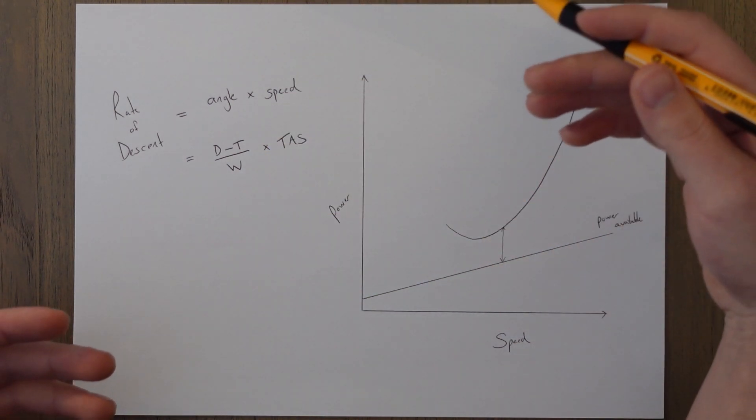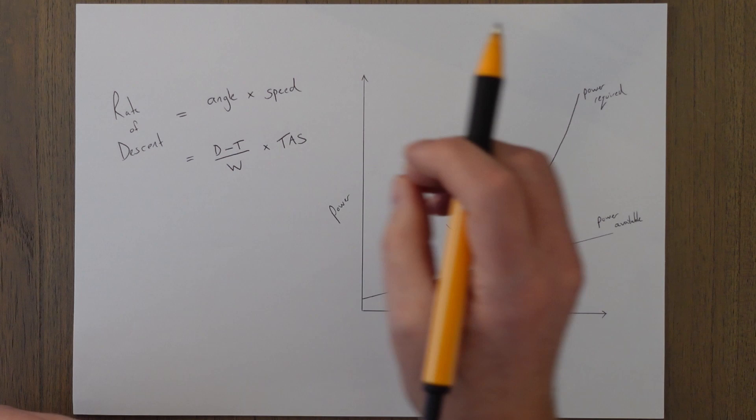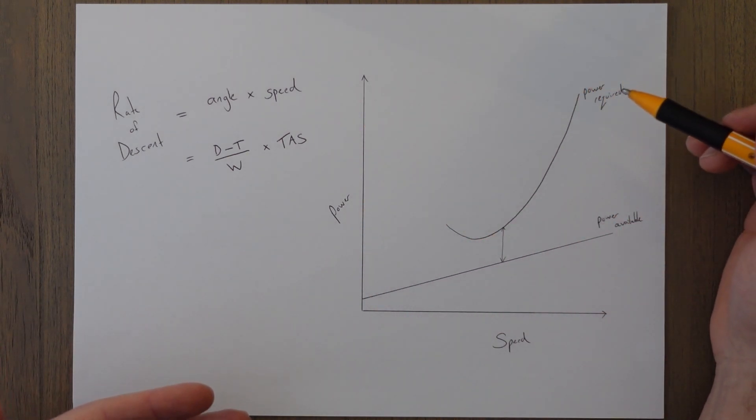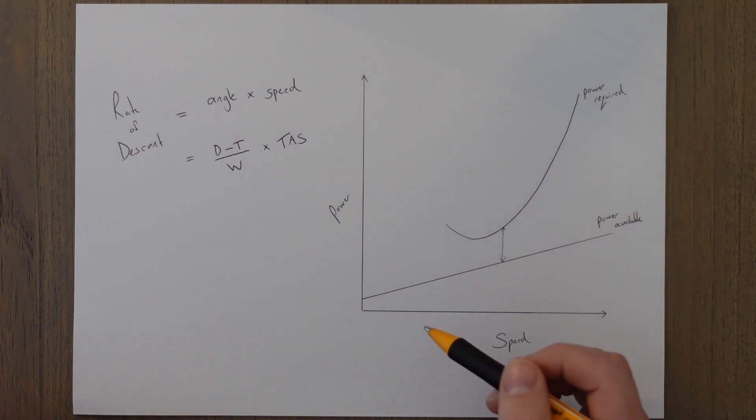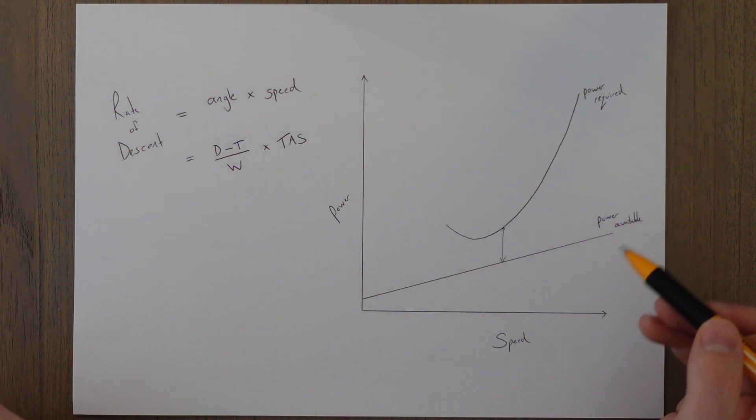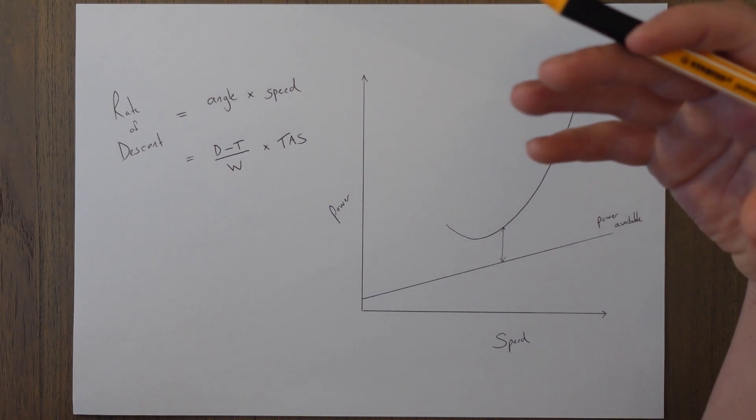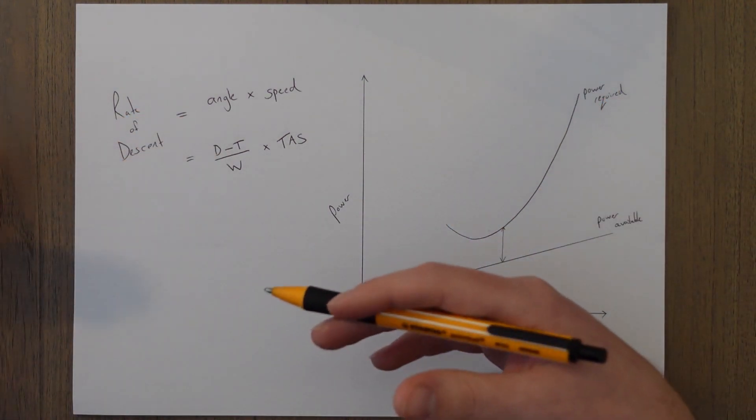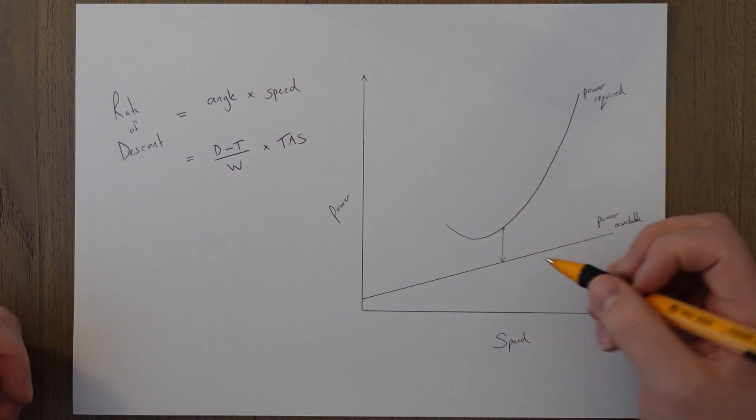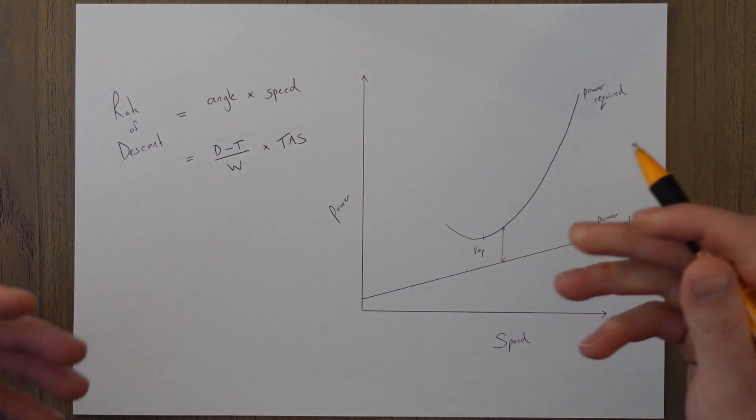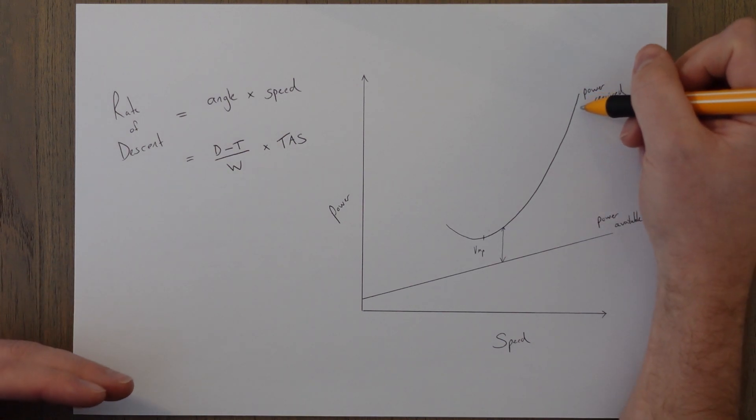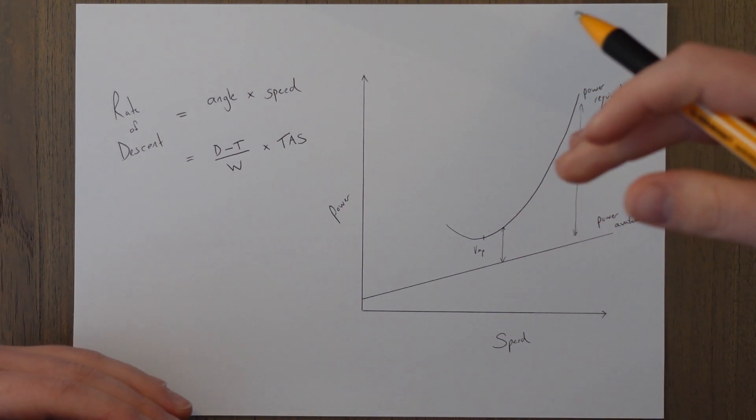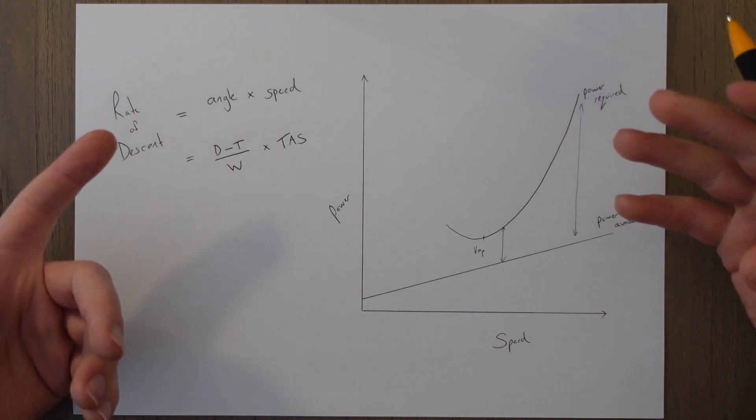So if we take that drag curve example from before and factor in the true airspeed by multiplying every single point on that graph by the true airspeed we get a graph that looks like this. The drag times the true airspeed equals the power required which is this curve here, and if we take the true airspeed times the thrust, that flat line, then we get the power available line. This is basically the same as things were for the angle but except it's considering power. So if we wanted to minimize our rate of descent then we need to minimize excess power and that happens just above the speed for minimum power, VMP. And if we wanted to maximize our rate of descent we'd fly with a lot of excess power required which would be up at a faster speed. Similar things basically: if you're flying really fast down the slope, descending at a really steep angle, you're going to descend really fast, your rate of descent is going to be a lot quicker.